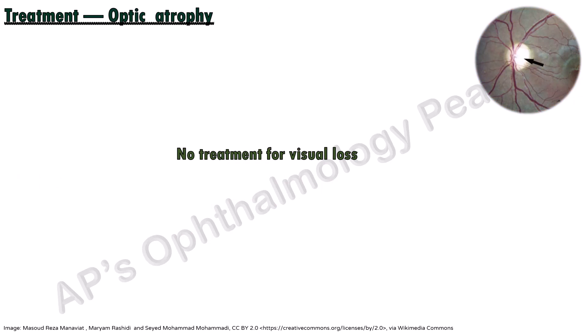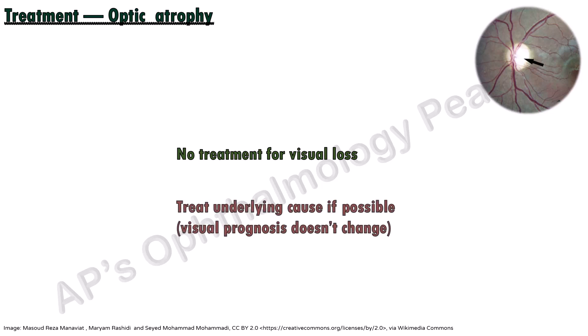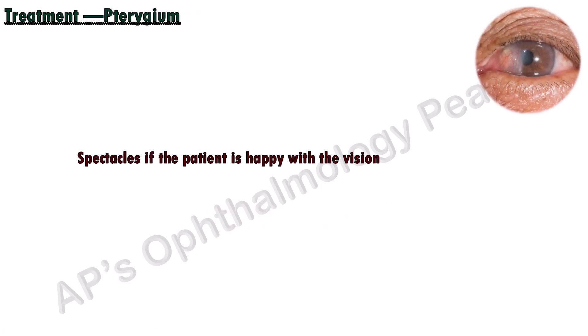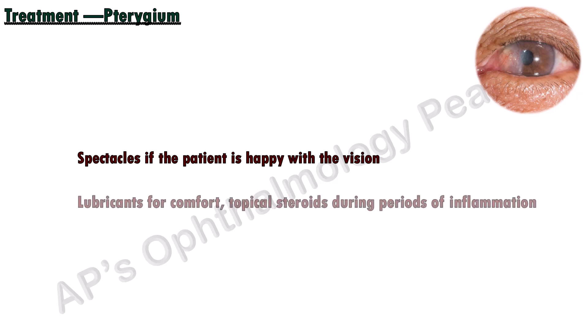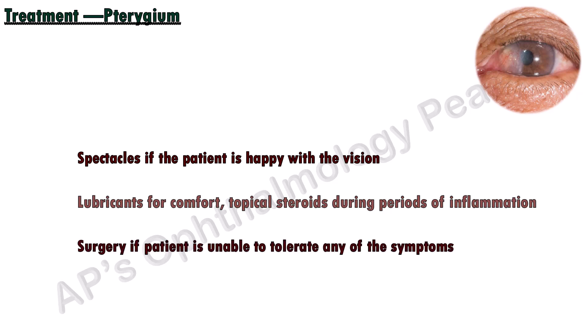Once optic atrophy sets in, there is no treatment that can reverse the visual loss. If any underlying cause such as multiple sclerosis or a vascular cause is found, treatment of those conditions should be undertaken. For a pterygium, if vision improves with spectacles these may be prescribed. Topical lubricants such as carboxymethyl cellulose may be prescribed for comfort. If the pterygium gets inflamed, short-term topical steroids may be given. If symptoms are not tolerated, pterygium excision with conjunctival autograft may be undertaken.